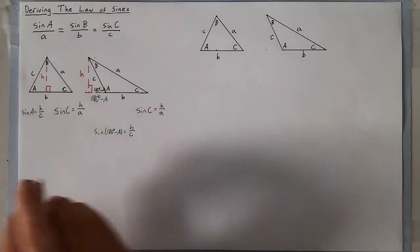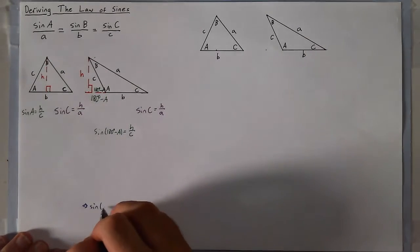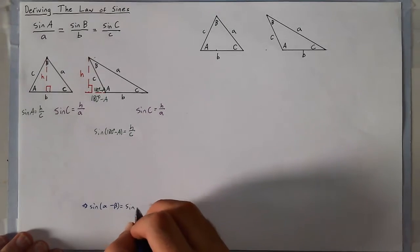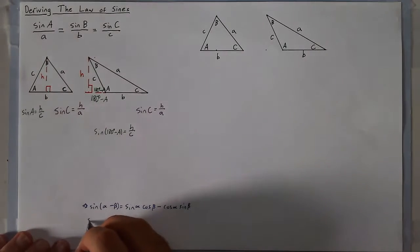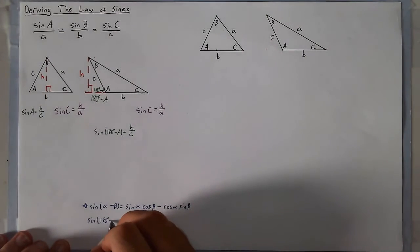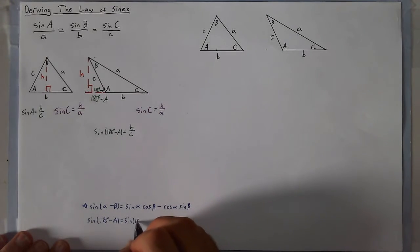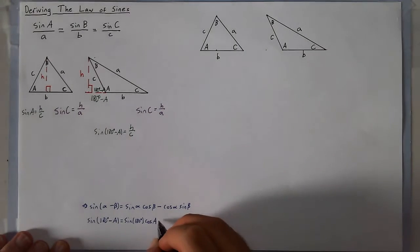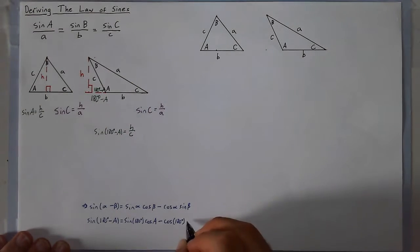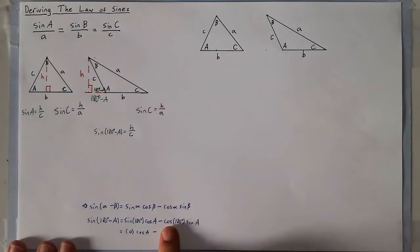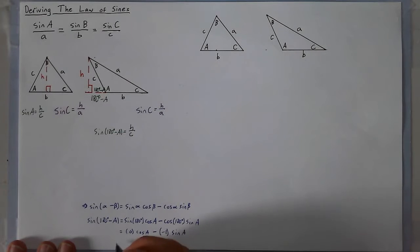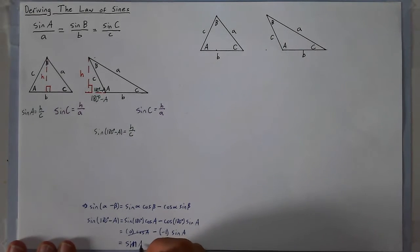We have this 180 minus A, which seems strange since it's not just A. Let's use the difference formula for sine to resolve this: sine of alpha minus beta equals sine of alpha cosine of beta minus cosine of alpha sine of beta. So sine of 180 minus A equals sine of 180 times cosine of A minus cosine of 180 times sine of A. Since sine of 180 is 0 and cosine of 180 is negative 1, this simplifies to positive sine of A.